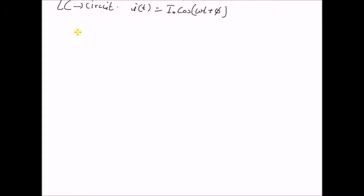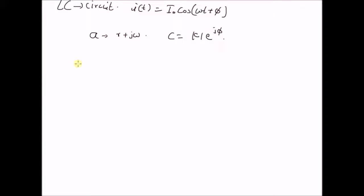Now, let us look at the final case where the value of a is fully complex — that is, it has both a real component and an imaginary component — and c is also a complex number with amplitude equal to the modulus of c and phase equal to φ. Therefore, the signal x(t) has the structure: modulus of c times e^(jφ) times e^((r + jω)t).